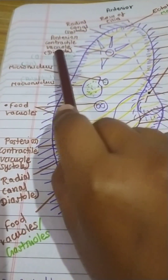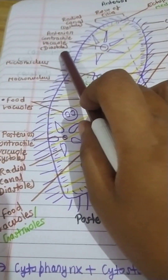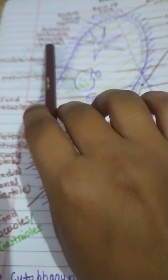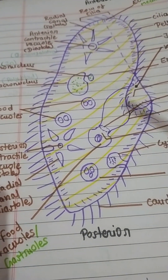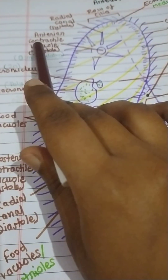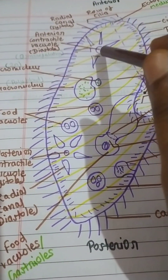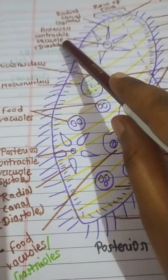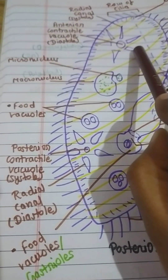Osmoregulation means the balance of water content within the body. If paramecium takes in excess water, it is not good for the body parts. The excess water diffuses out through the anterior contractile vacuole and the posterior contractile vacuole. So the function of both contractile vacuoles is osmoregulation — maintaining the water balance within the body of the paramecium.